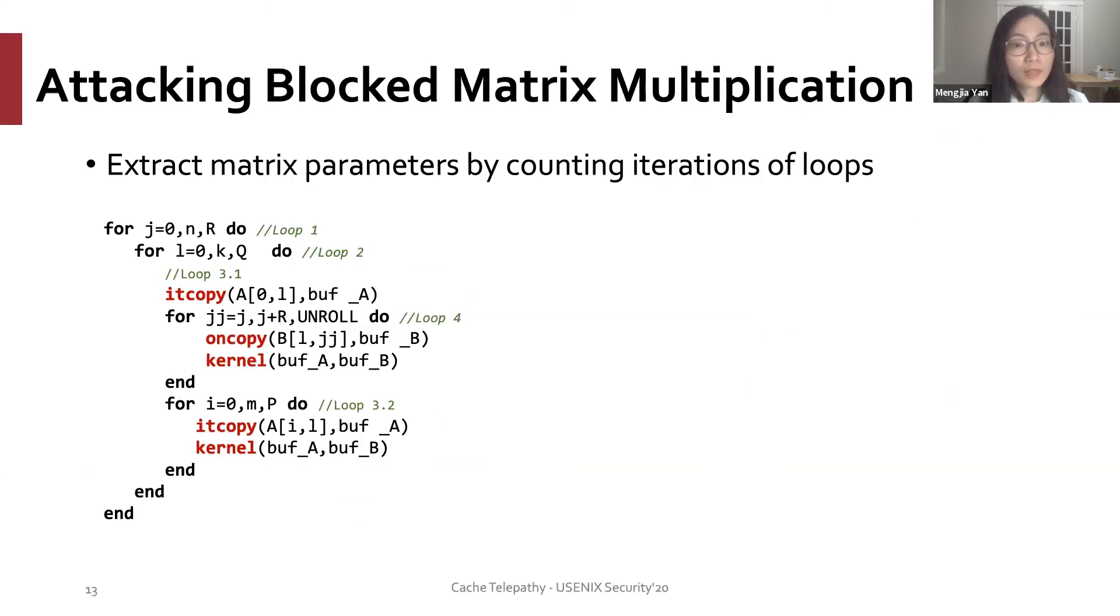We can extract matrix parameters by counting the iterations of the four loops as analyzed. And how to count the iterations? We can identify the dynamic call graphs for the three functions highlighted in the code snippet. That is itcopy, oncopy, and kernel.